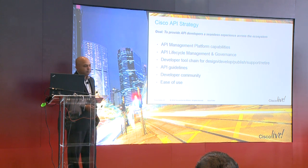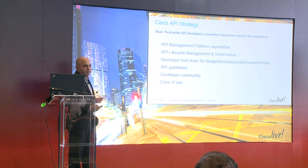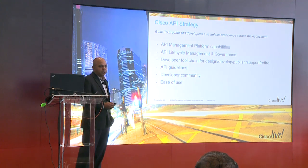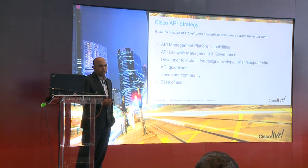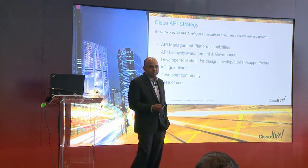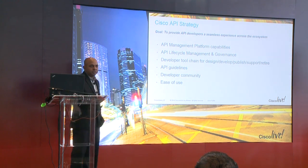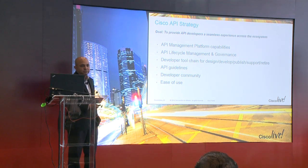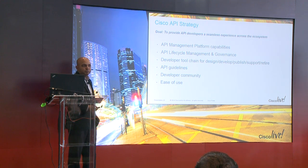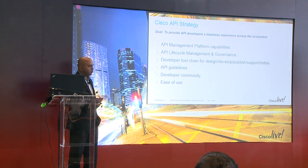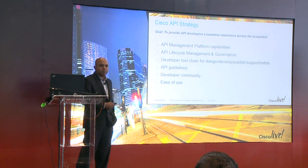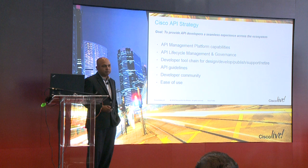These are technology capabilities we're talking about — lifecycle management and governance. The tool chain covers every stage: how you define APIs, develop them, publish them, support them, and retire them. These elements need to be standard and available across the entire ecosystem, whether you're internal to Cisco, external, or part of the ISV ecosystem. API guidelines apply across the board, promoting the developer community in niche or marketplace segments. And underlying everything we do is ease of use.